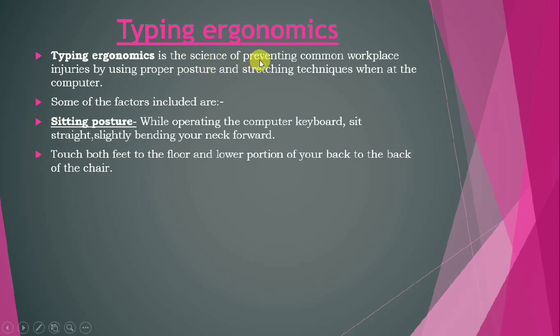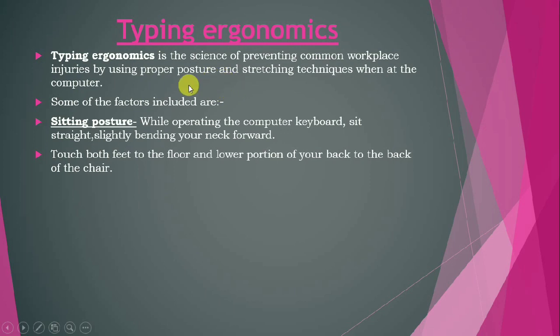Next is typing ergonomics. Typing ergonomics is the science of preventing common workplace injuries by using proper posture and stretching techniques when at a computer. When you are sitting at a computer and working on it, if your posture is not right or you are not sitting properly, it may cause some pain in your body parts or strain on your eyes. So typing ergonomics is the science of preventing such injuries.